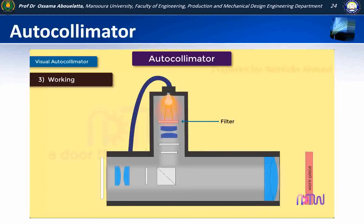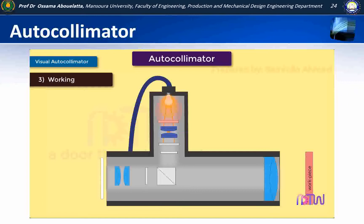After passing through the filter, the light beam passes through the condenser lens. The condenser lens helps in rendering a divergent beam from a point source into a parallel beam, which helps in rendering a sharper image. Then the light beam passes through the diffuser, which scatters light to transmit soft light.